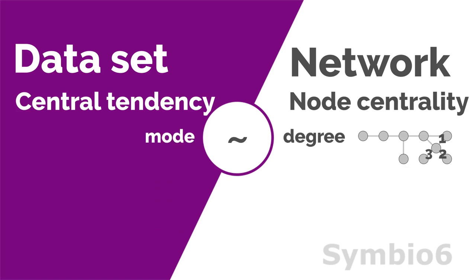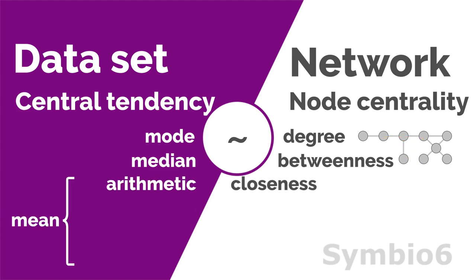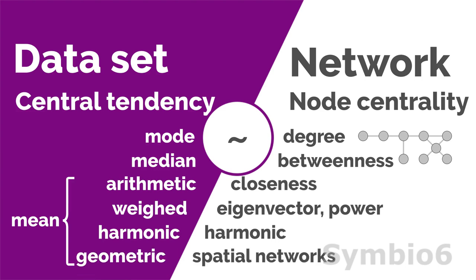Degree counts the number of connections. Betweenness describes the frequency with which the shortest path goes through a node. Closeness is the average distance to other nodes. Eigenvector and PageRank are extensions of degree centrality and state that a node is important if its neighbors are important. Harmonic centrality is an improved variant of closeness centrality. Geometric graphs or spatial networks are defined by geometric means, a large and amorphous subfield of graph theory. We explain these centralities in other videos.